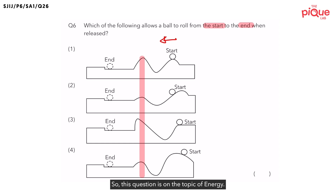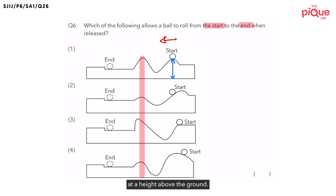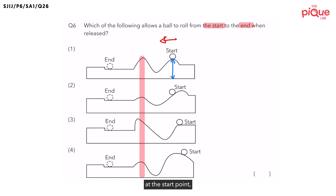This question is on the topic of energy. We can use option 1 as a basis of our discussion. The ball starts on top of a hill at a height above the ground. Can you recall which energy has height above the ground as its factor? Gravitational potential energy has height above the ground as its factor. Therefore, at the start point, the ball will possess gravitational potential energy.